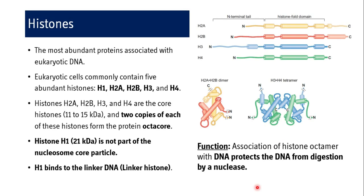Coming to histones. Histones are relatively small proteins with a preponderance of basic, positively charged amino acids — lysine and arginine. The strong positive charge of histones enables them to bind to and neutralize the negatively charged DNA molecule throughout the chromatin. The histones make up half of all chromatin protein by weight and are classified into five types: H1, H2A, H2B, H3, and H4.